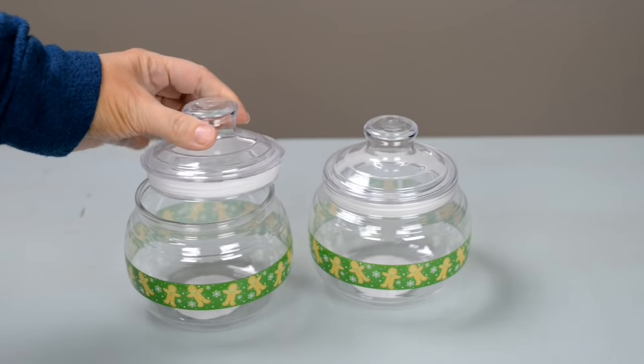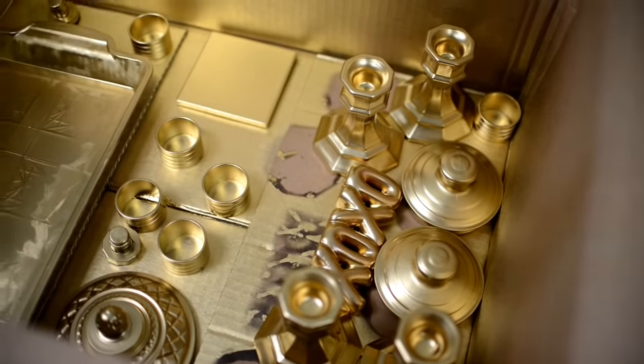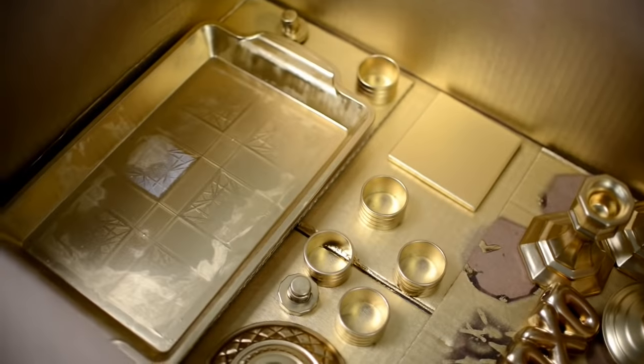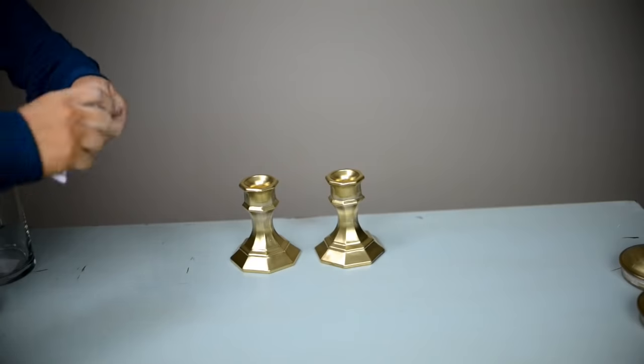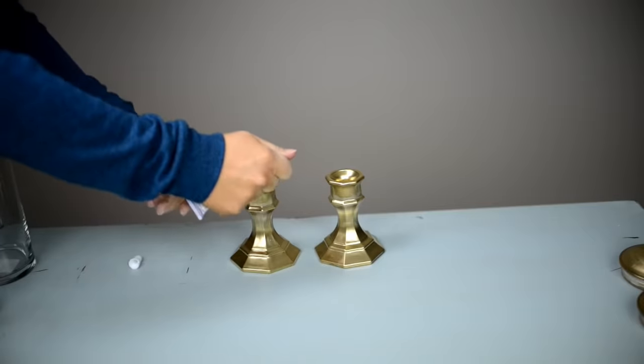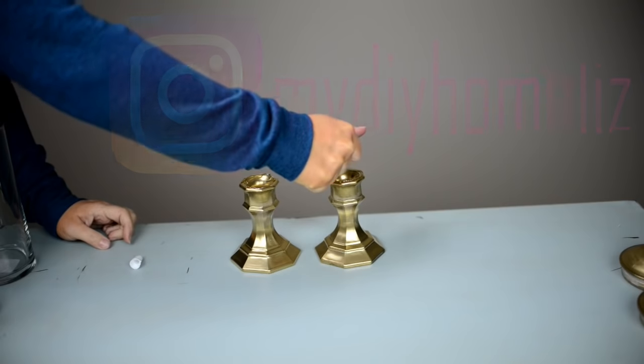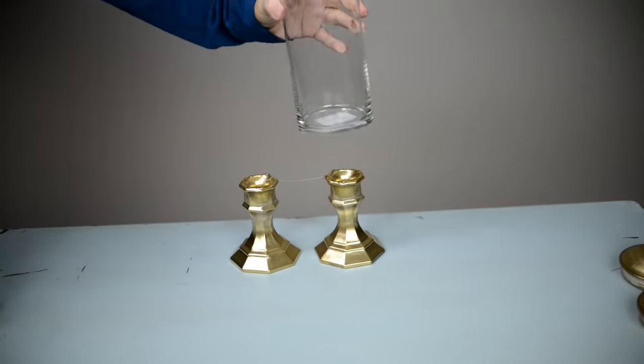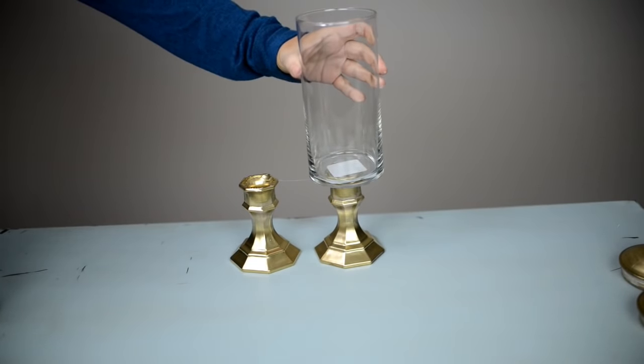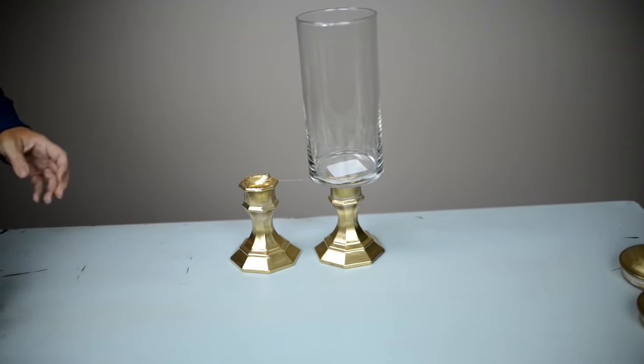Then I went outside and painted the candlesticks and the lids this gold color. The first thing you're going to do is take some E6000 glue and put it at the bottom of your candlesticks, and then you're going to attach the glass to the top of your candlesticks.